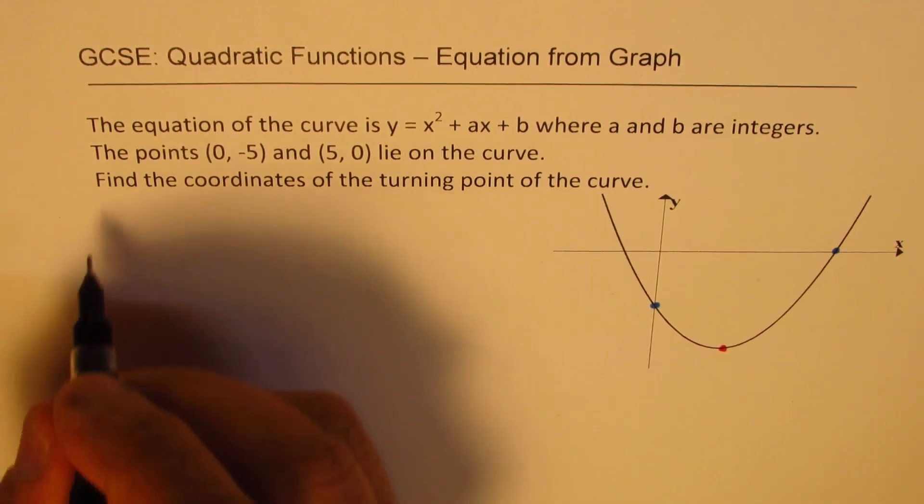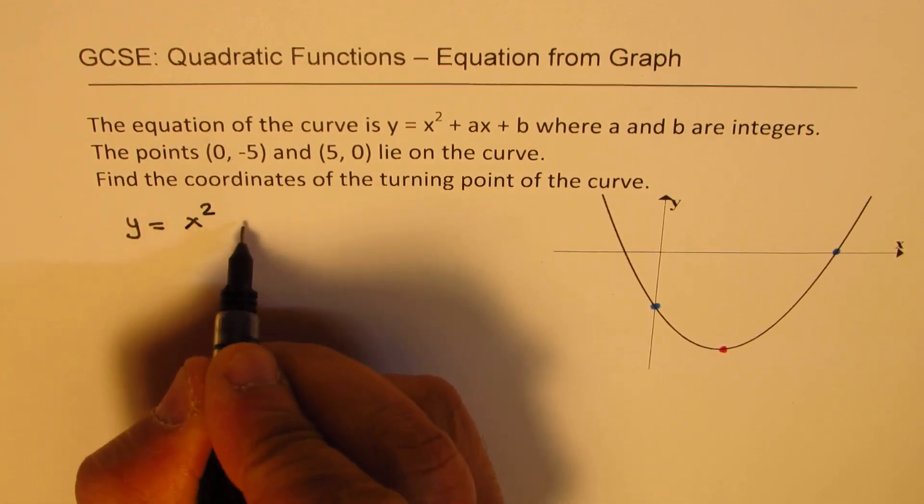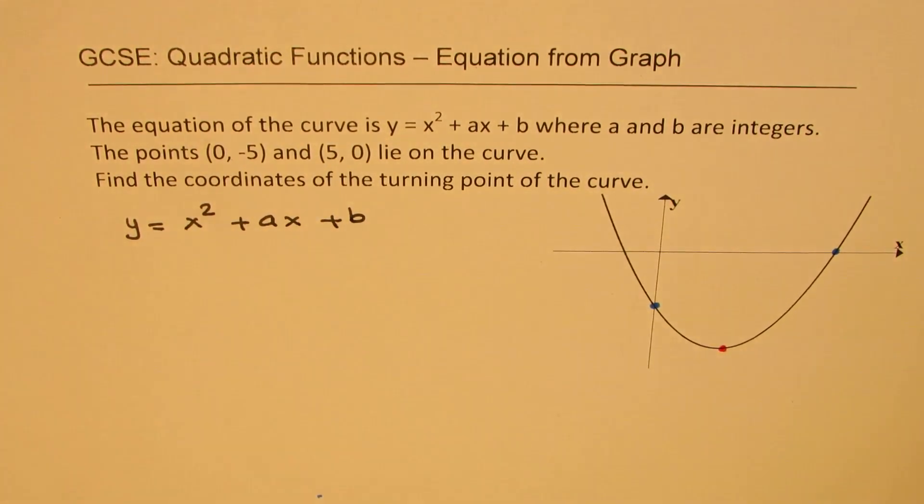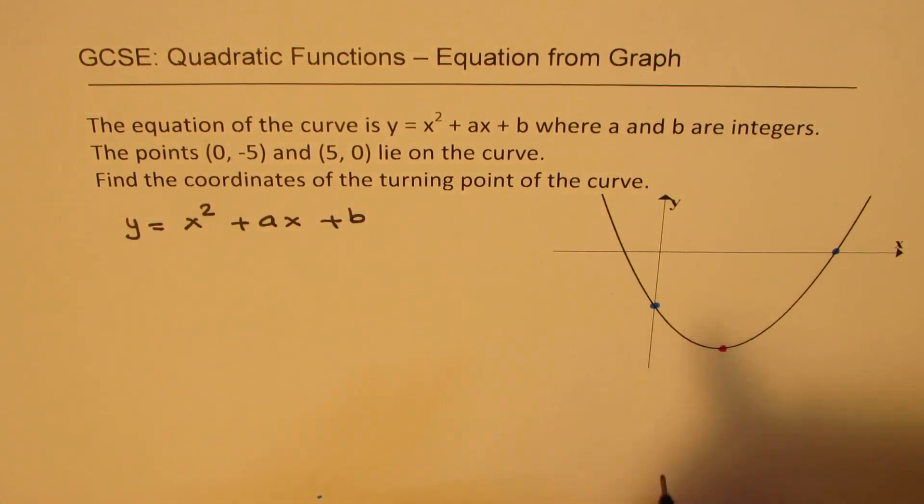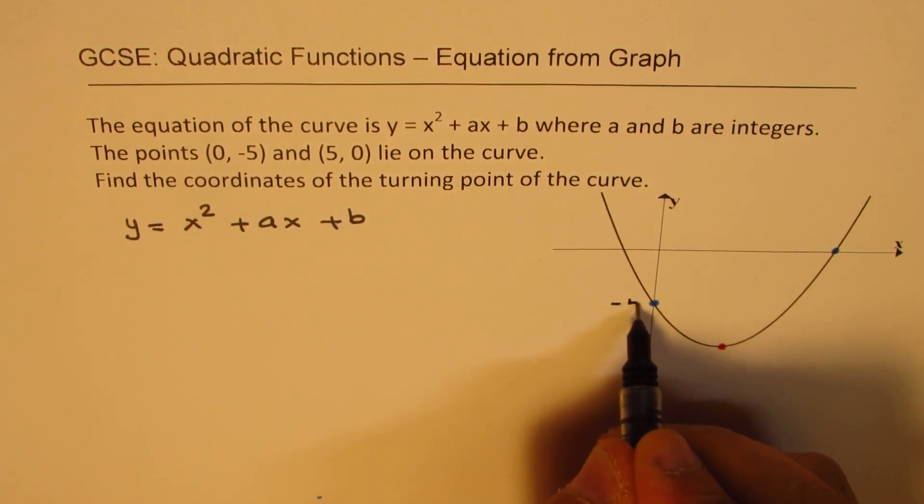So we have the equation y equals x squared plus ax plus b. There are two unknowns, a and b, and we have two points, so we can definitely find the solution.